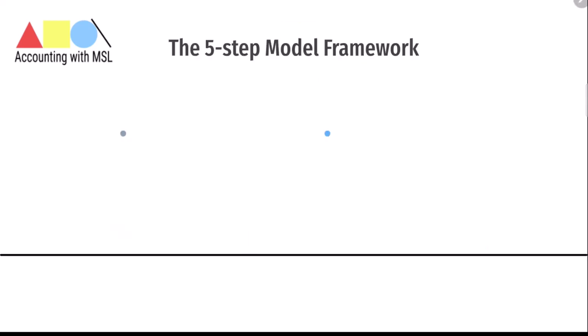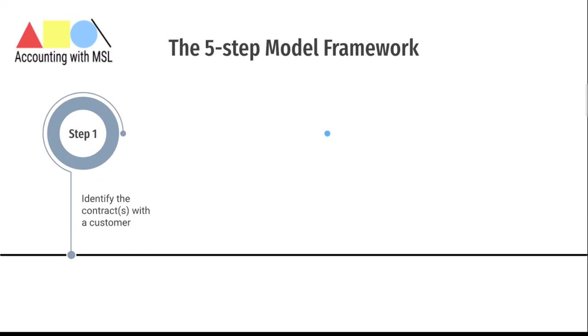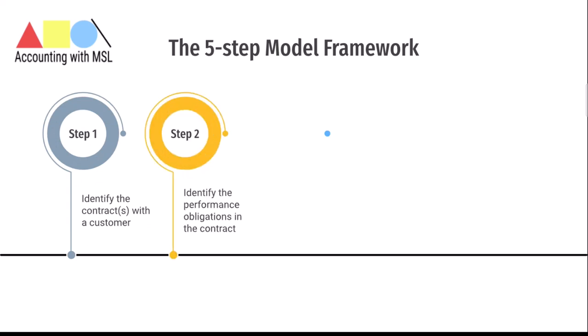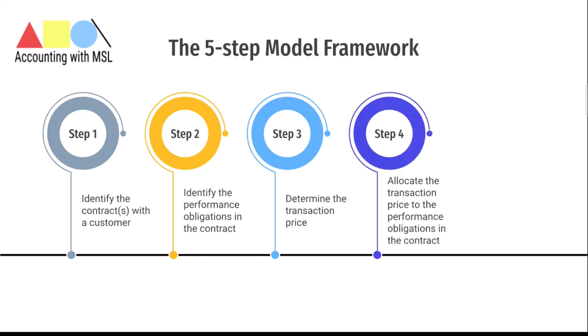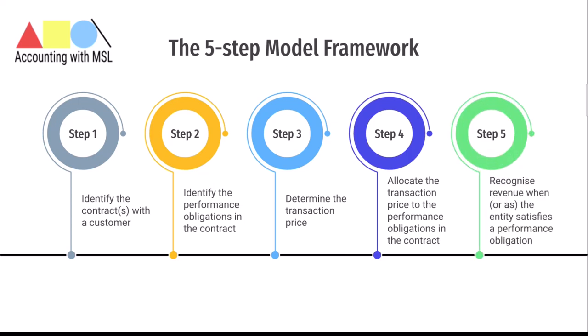Now let's come to perhaps the most important part of IFRS 15. The core principle is that an entity will recognize revenue to depict the transfer of promised goods or services to customers in an amount that reflects the consideration to which the entity expects to be entitled in exchange for those goods or services. This core principle is delivered through a five-step model framework. Step one: identify the contract with the customer. Step two: identify the performance obligations. Step three: determine the transaction price. Step four: allocate the transaction price to the performance obligations. Step five: recognize revenue when or as the entity satisfies each performance obligation. Application of this guidance will depend on the facts and circumstances and will require exercise of judgment.